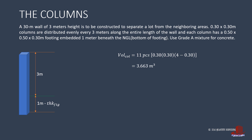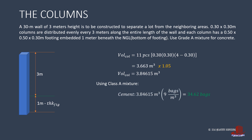Before computing for materials, remember to multiply a wastage factor for concrete works. Since columns are poured in enclosed forms, the factor is 5%. Thus, the total volume of the column is taken as 3.84615 cubic meters. From this volume, using class A mixture: cement is 3.84615 multiplied by 9 bags per cubic meter, giving 34.62 bags. Sand is estimated as the volume times 0.5 cubic meters, giving 1.92 cubic meters. Gravel is the volume multiplied by 1, yielding 3.85 cubic meters.